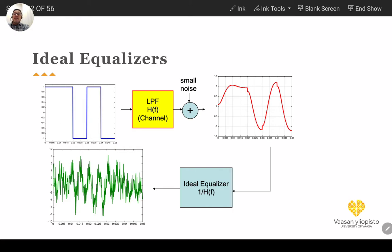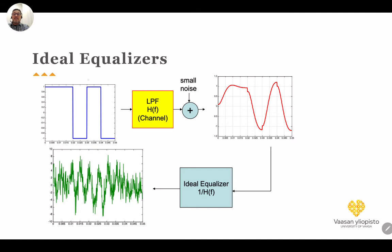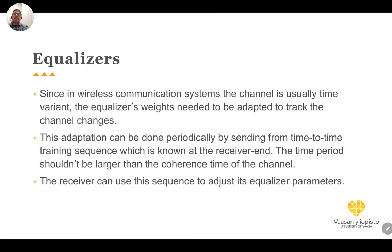A simple MATLAB example illustrates this. The transmitted signal is a sequence like +1, +1, −1, +1, −1. The channel is modeled as a low-pass filter with very small added noise. Because of multipath, the received signal is corrupted. When we apply the ideal equalizer by dividing by H(f), the signal disappears into noise due to noise amplification. The signal without equalization actually looks better, so the ideal equalizer is generally not practical.